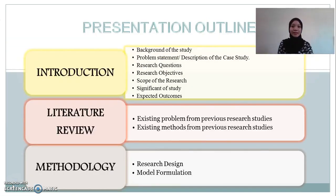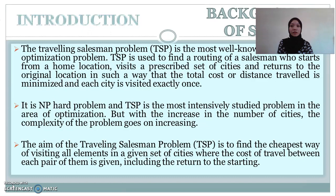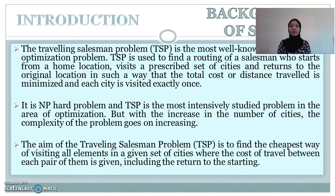Today we will present about our project which is the Travelling Assessment Problem and Integer Linear Programming Formulation. Our presentation outline includes Introduction, Literature Review and Methodology. For our background of study, the Travelling Assessment Problem, TSP, is the most well-known combinatorial optimisation problem. TSP is used to find a routing of travellers who start from a home location, visit a prescribed set of cities and return to the original location, such that the total cost or distance travelled is minimized and each city is visited exactly once. It is an NP-hard problem and TSP is the most intensively studied problem in the area of optimisation.